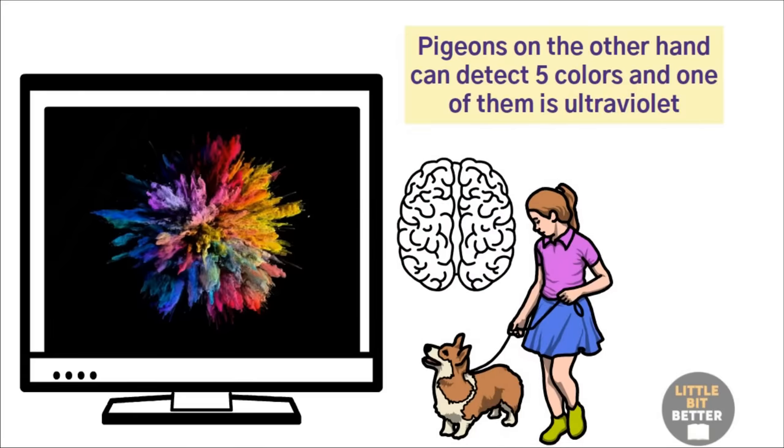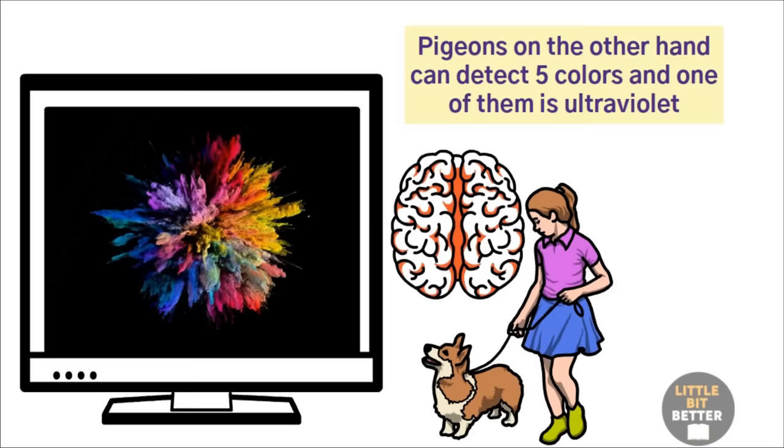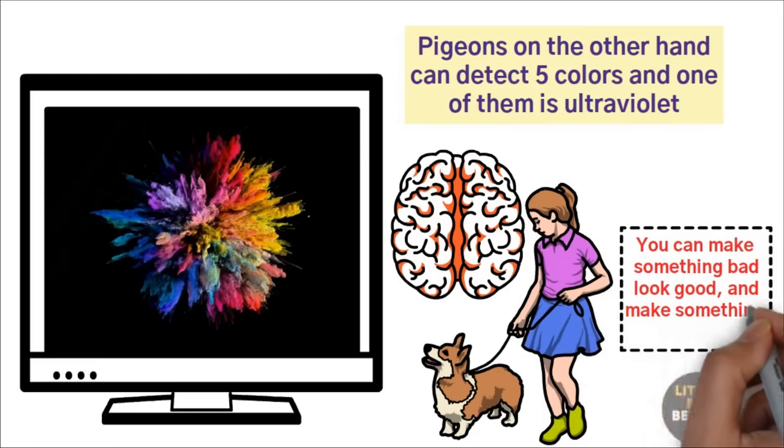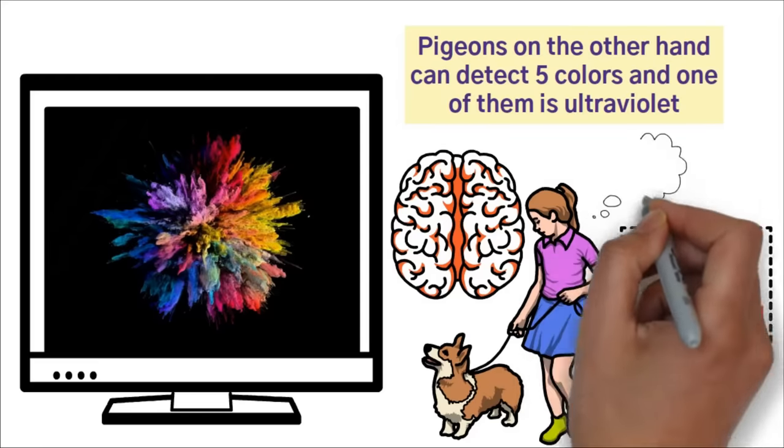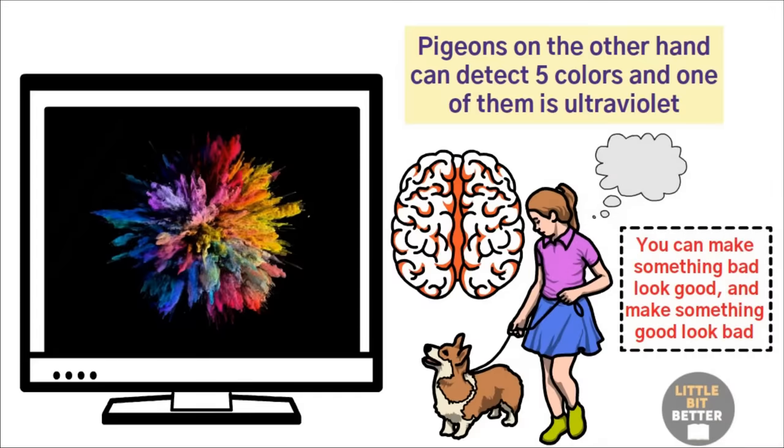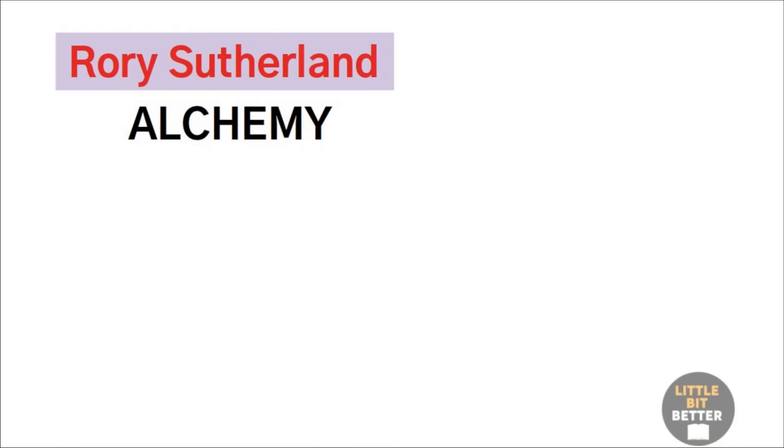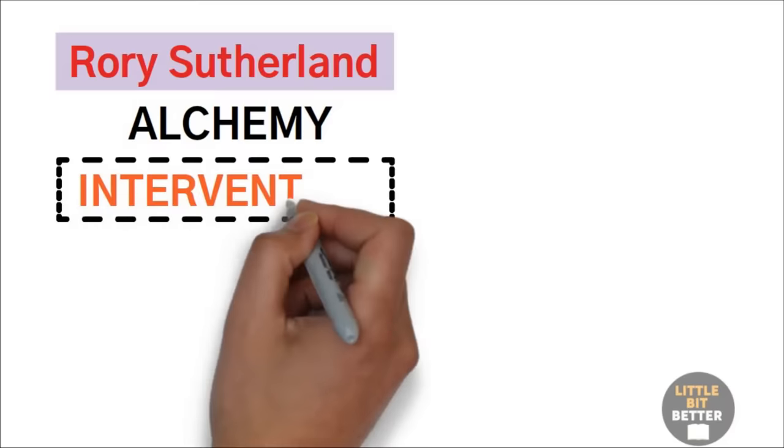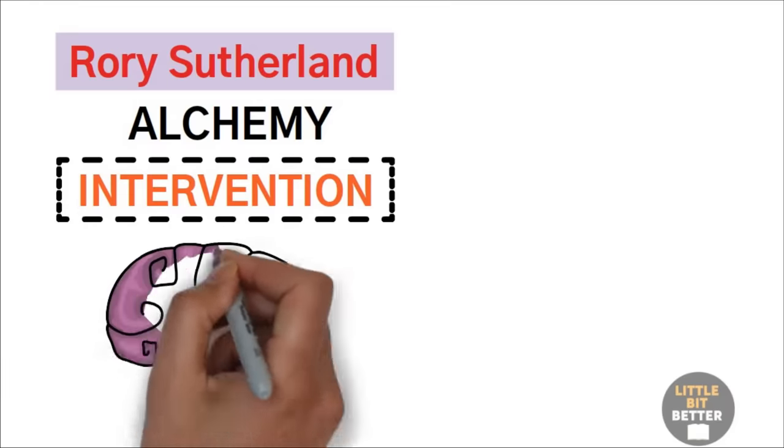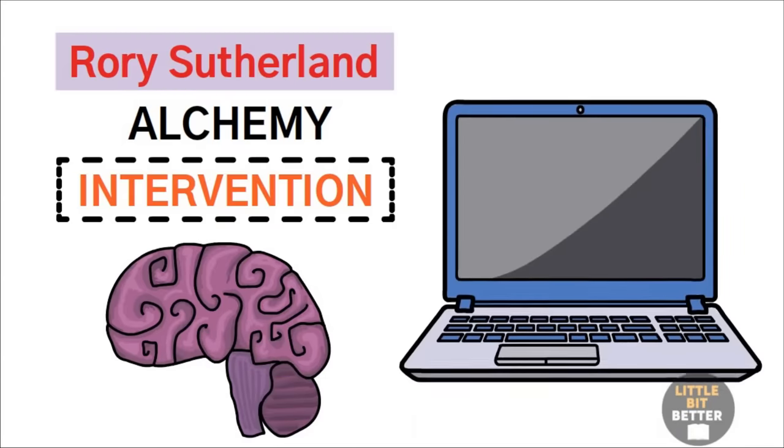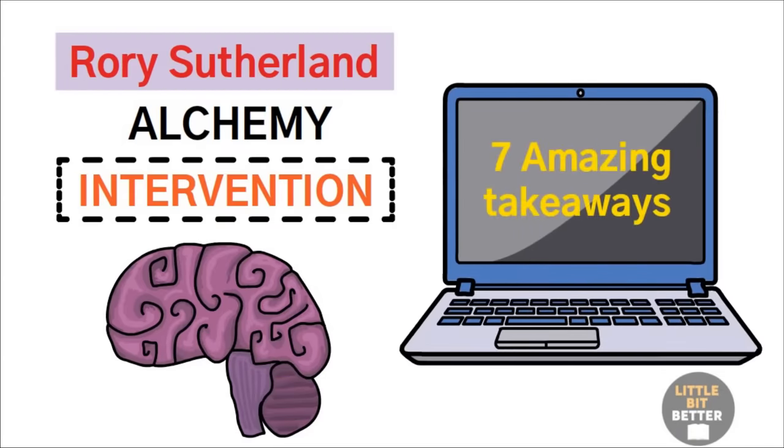Just like you can create a new color in a human brain, you can do the exact same thing and create new things without actually creating them in real life. You can make something bad look good and make something good look bad. I know you're thinking that this is some kind of scammy psychological trick, but it's not. It is science-based. Rory Sutherland, the author of the book titled Alchemy, calls this process intervention. Intervention is similar to innovation, but instead of creating something new in the physical world, you create it in the brain. In this video, I will share with you seven amazing takeaways from that book.